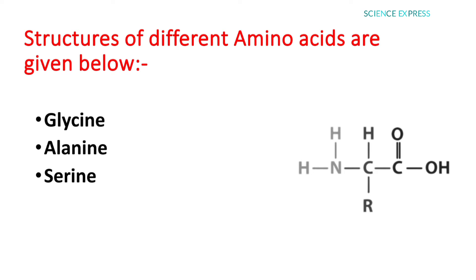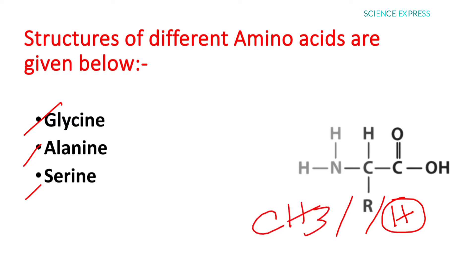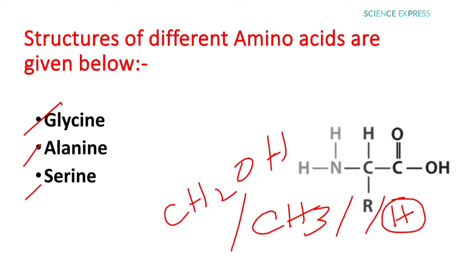So there are three types of amino acids shown here: glycine, alanine, and serine. If the R group is replaced by hydrogen, the amino acid is glycine. If the R group is replaced by CH₃, the amino acid is alanine. If the R group is replaced by CH₂OH, the amino acid is serine. Glycine is called the simplest amino acid among all 20 amino acids, because in glycine the R group is simply replaced by hydrogen.